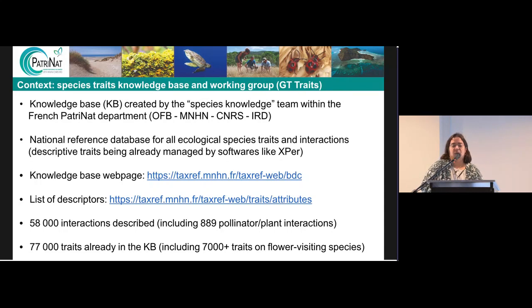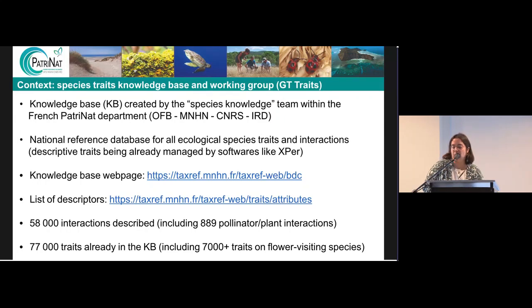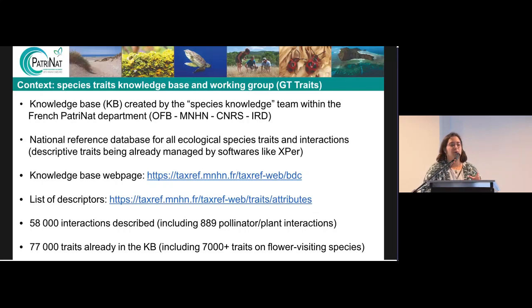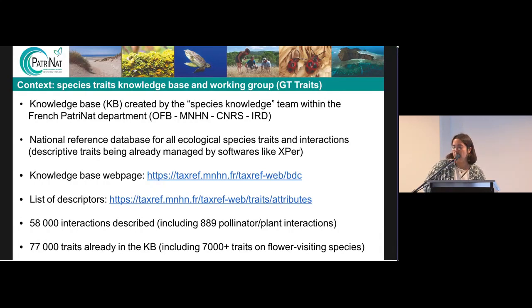Right now it's not fully accessible — it's still in development, so we're trying to make it available following the FAIR principles. Currently, there are more than 58,000 interactions described, including almost 900 pollinator-plant interactions. I'm focusing on pollinator-plant interactions because it's a special focus of our project — we wanted to restrict the scope a bit, so we chose the pollinator thematic. Around 77,000 traits are already in the Knowledge Base, including more than 7,000 traits on flora-visiting species.